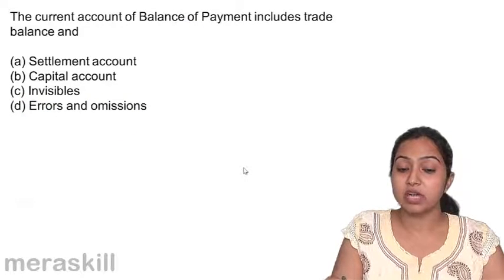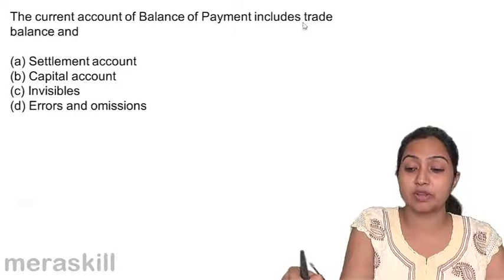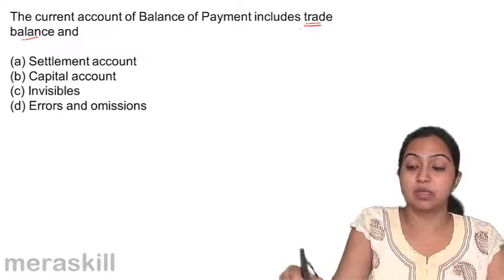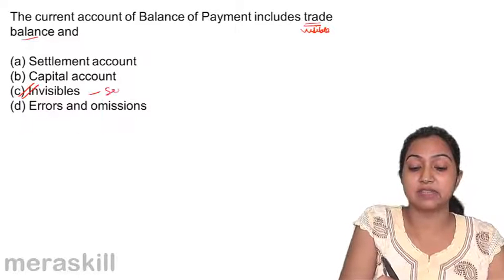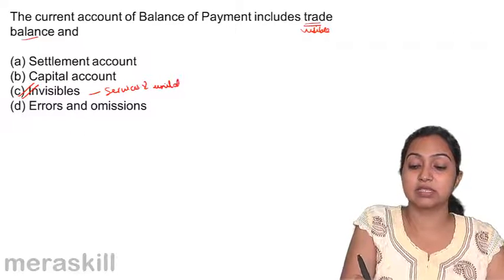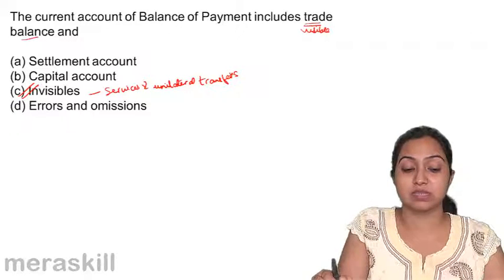The current account of BOP includes trade balance. Current account talks about trade balance, which is the visible balance or visible trade, and it also talks about invisibles — that is, services and unilateral transfers. This is what current account is about: visibles plus invisibles.